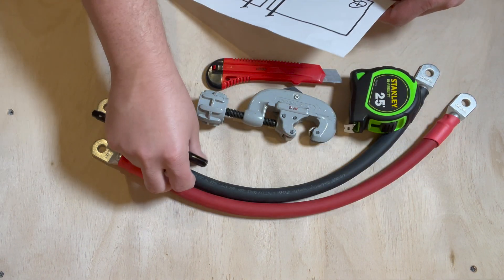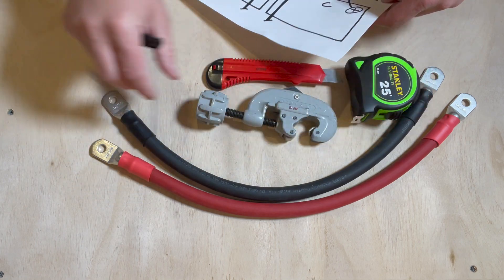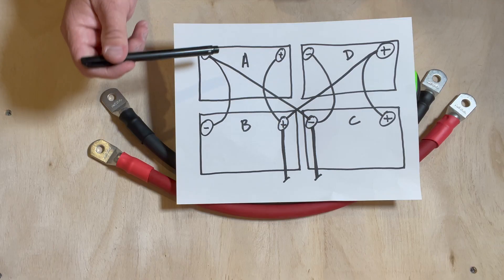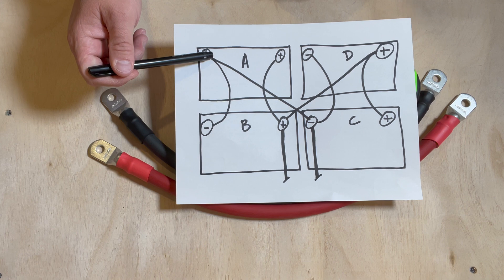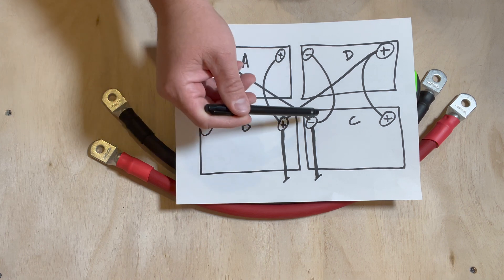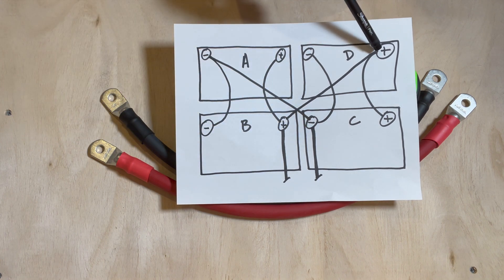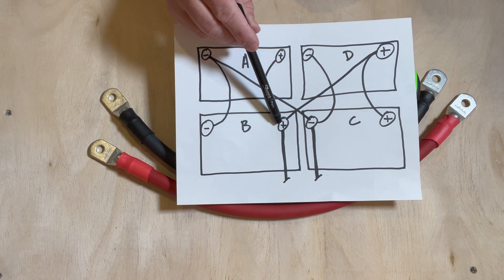What's important to know is that all of your cables need to be exactly the same length. My furthest distance is from this A negative to the C negative and the same, the D positive to the B positive.